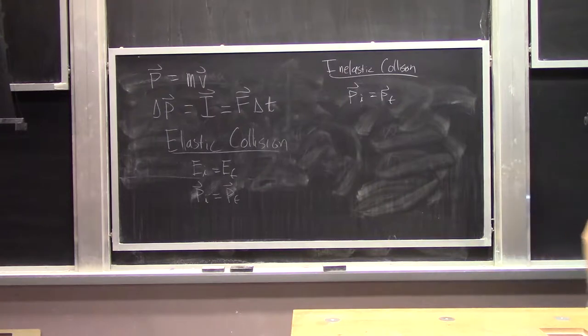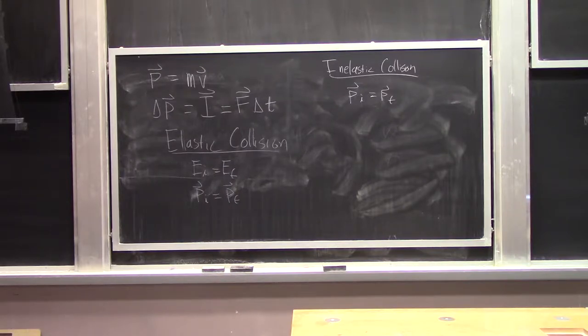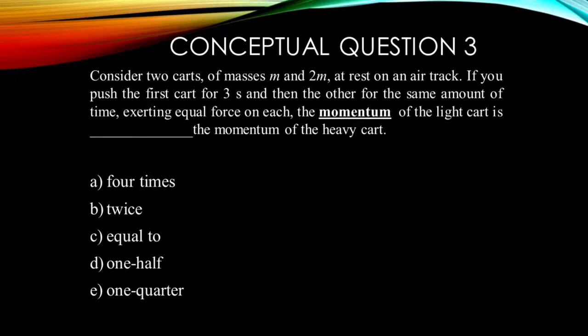Here is our first question, the one we left off with last time. Consider two carts of mass M and 2M at rest on an air track. If you push the first cart for three seconds and the other for the same amount of time, exerting an equal force on each, the momentum of the light cart is blank the momentum of the heavy cart.